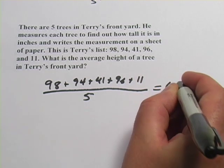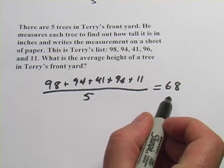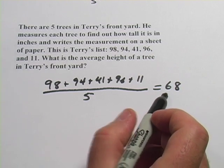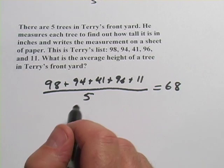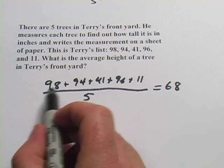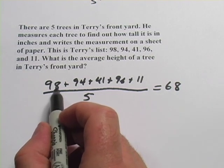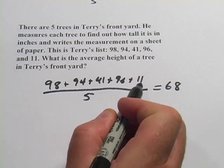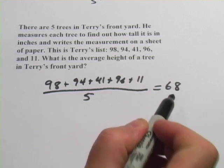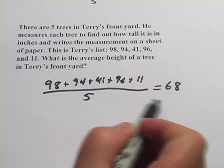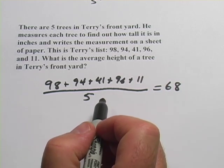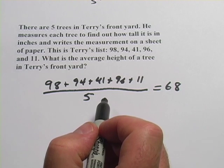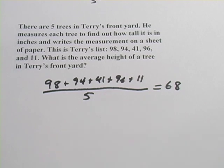And again, this average, or this mean, should be somewhere in the middle of this whole group of numbers. The tallest one here is 98, the smallest one is 11, and 68 is definitely somewhere in the middle of all of that. So those are some problems about averages.